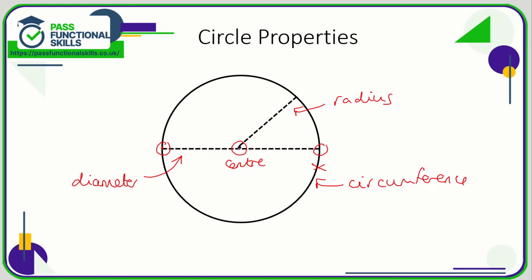This point here to the center is a radius, and from the center to here is another radius. So the diameter is double the length of the radius, or the radius is half the diameter.